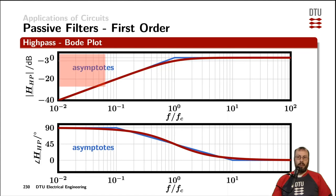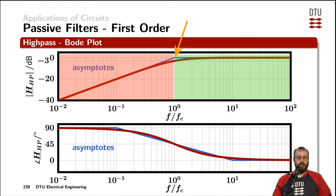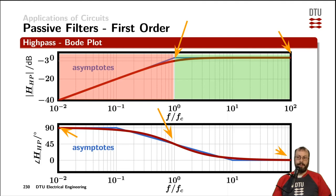This time, the stopband is below the corner frequency and the passband is above the corner frequency. At the corner frequency, the amplitude is 3 dB away from its maximum, which it reaches as frequency approaches infinity. The phase turns by 45 degrees compared to the 90 degrees it had at the start, and approaches zero for frequencies approaching infinity. The asymptotes shown in blue are again an engineering estimation using straight lines on a logarithmic diagram.